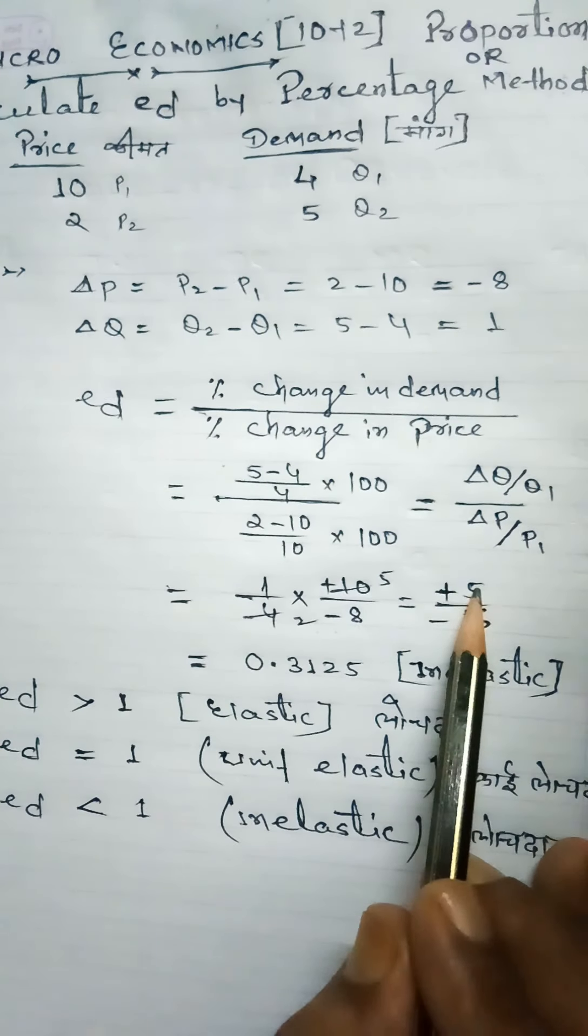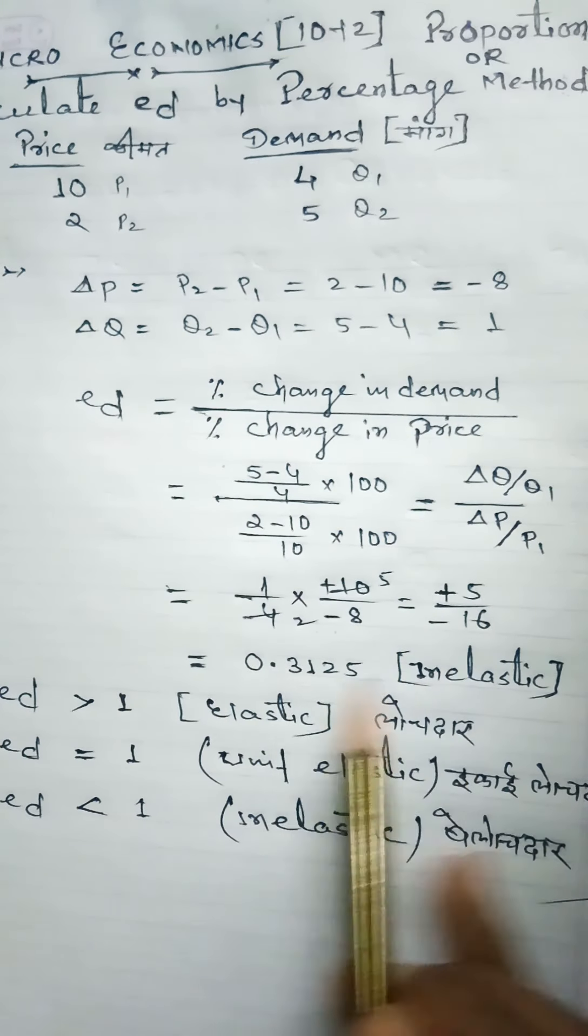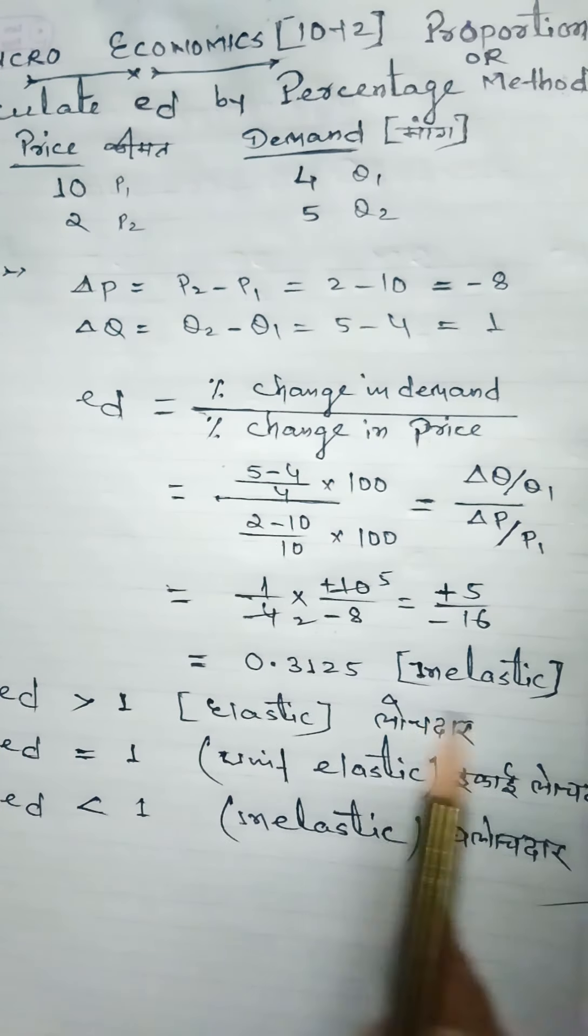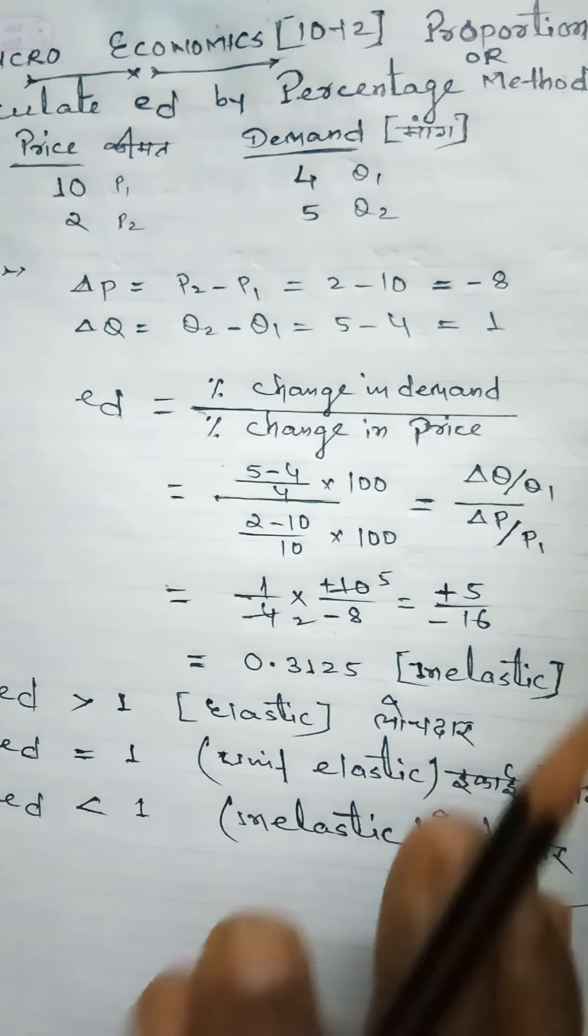Solving gives us 5 by minus 16. The answer has a negative sign, but we can ignore the negative in the final answer.